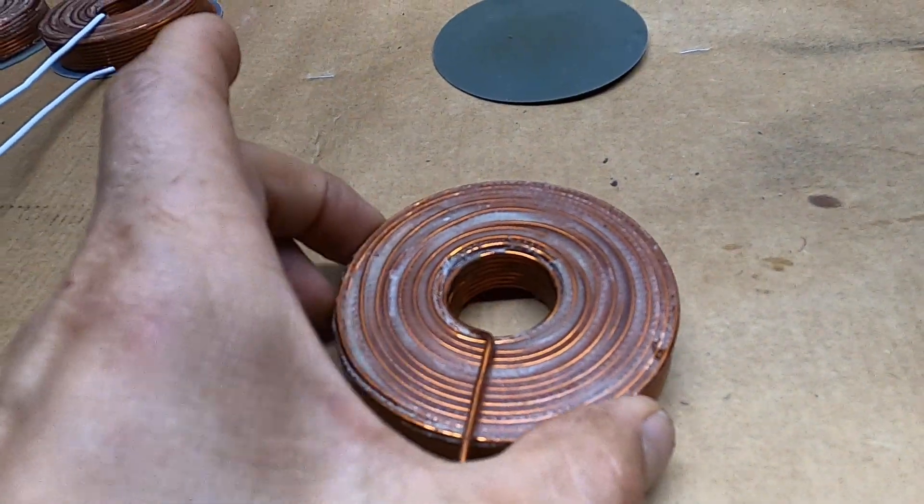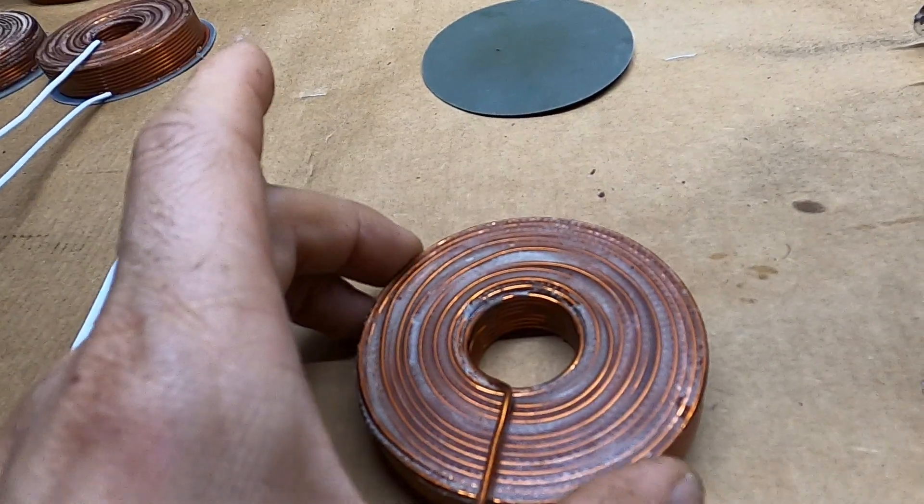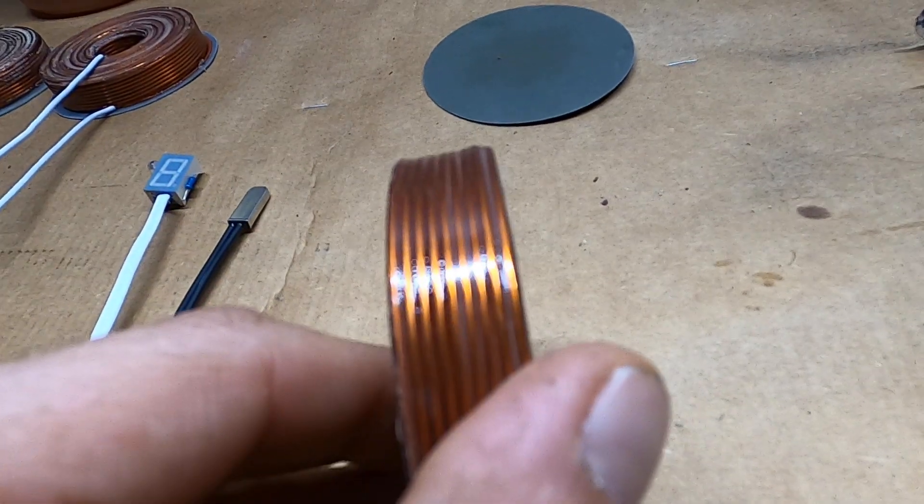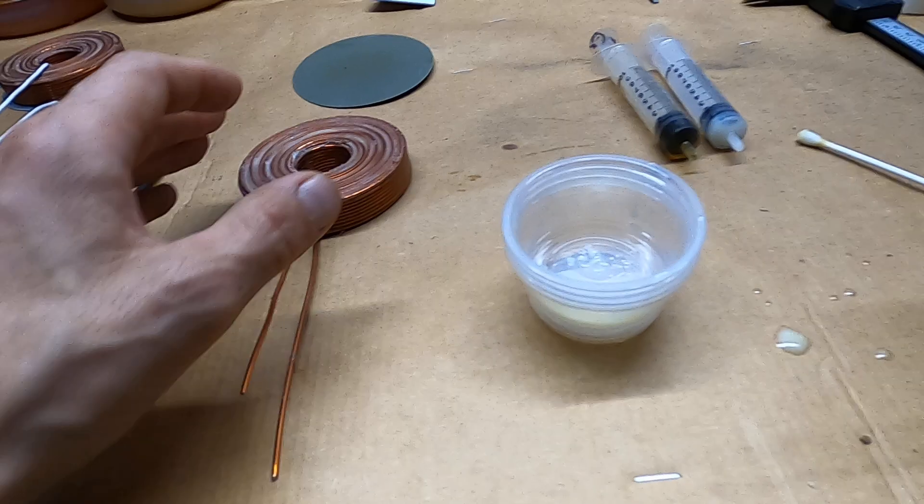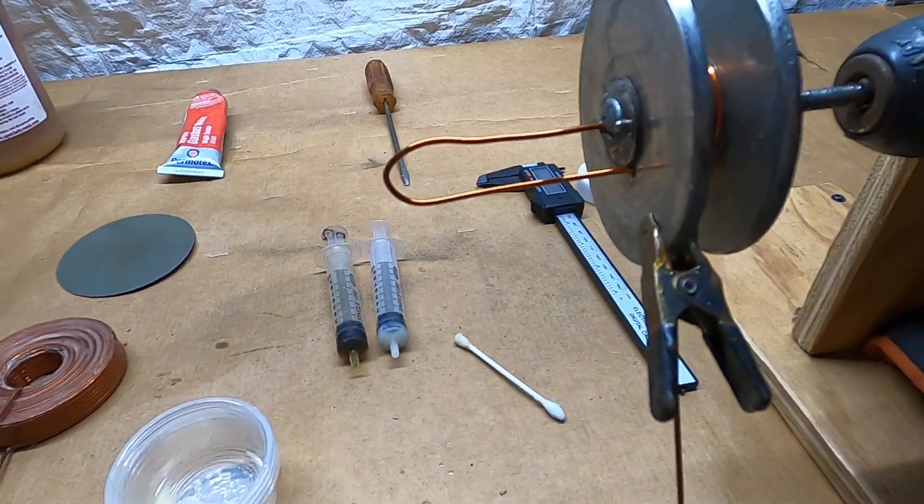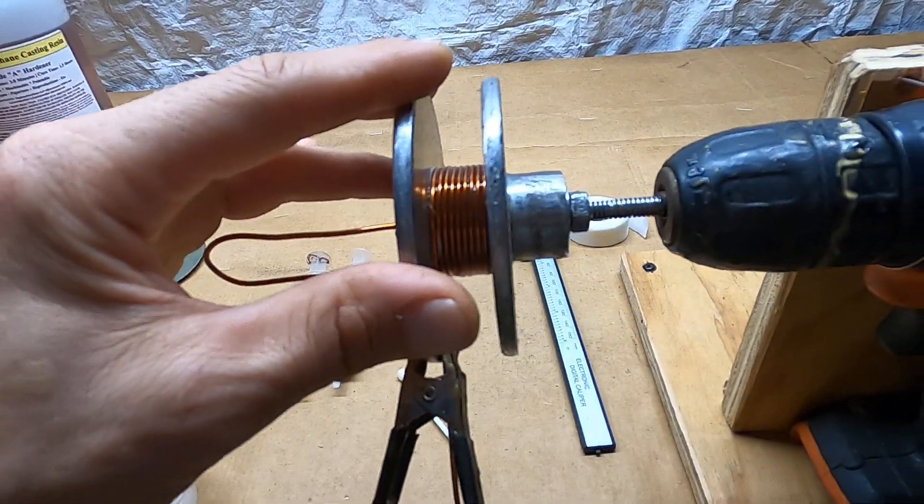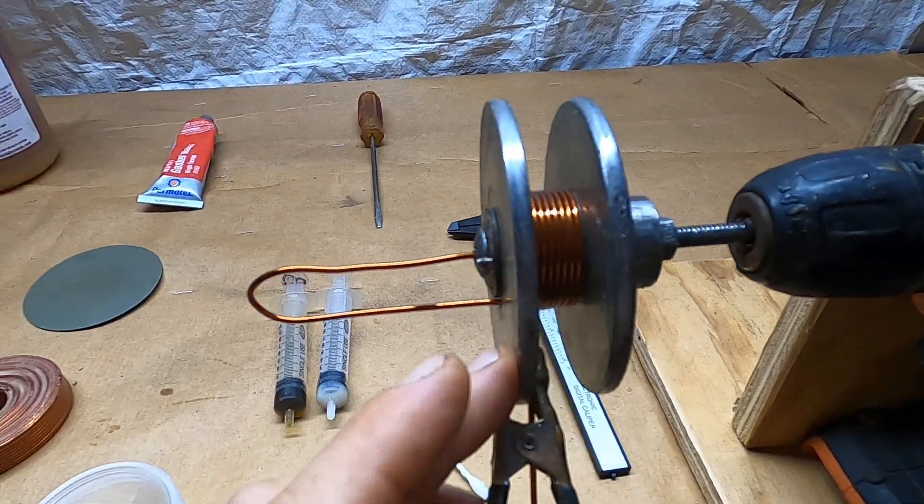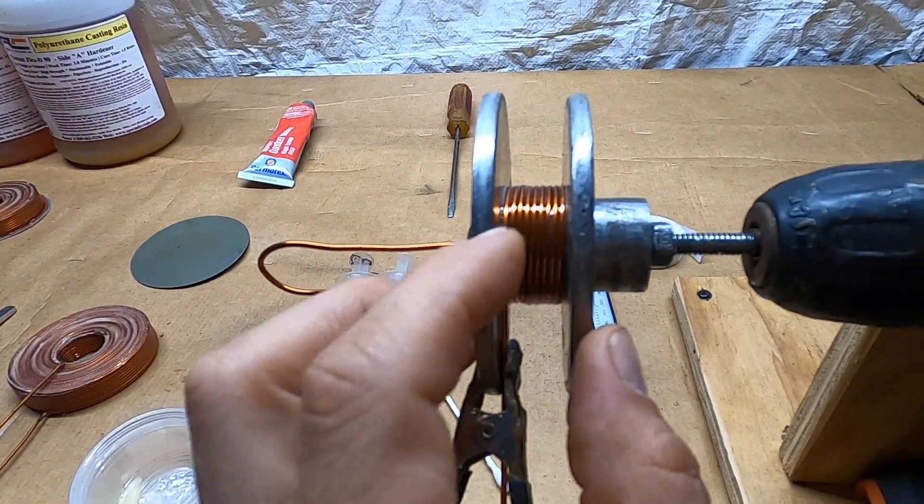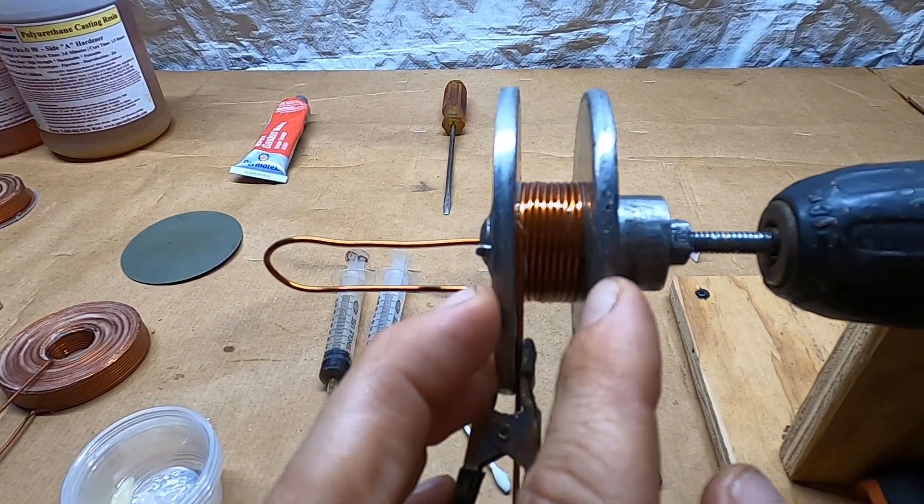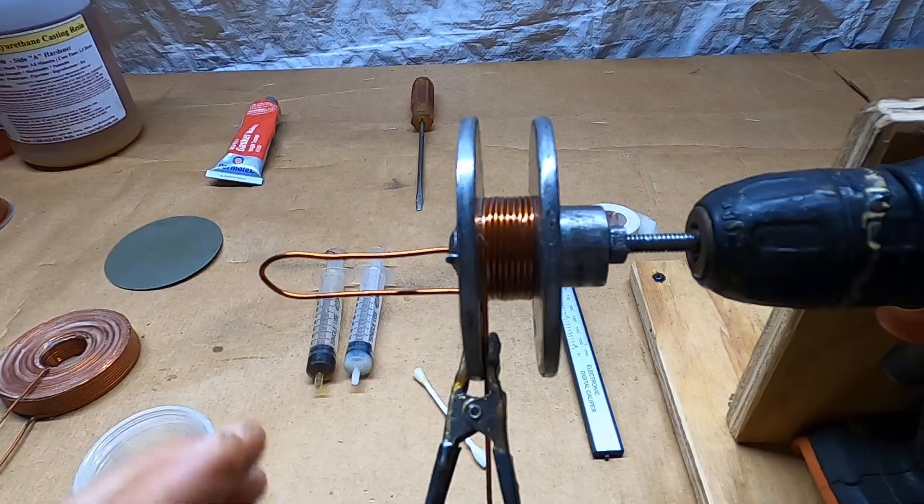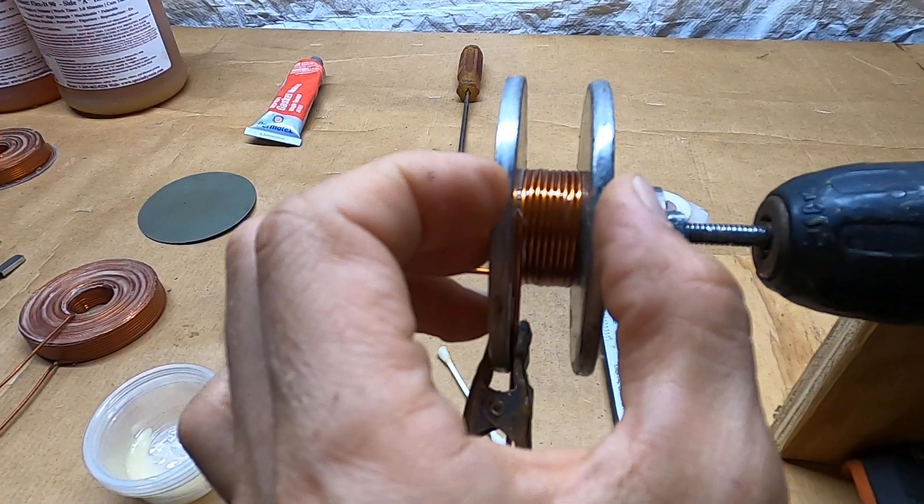The outside diameter is 3 inch, inside is 1 inch, thickness is 5/8 inch. To make this coil I use these two pieces from the speakers and I cut them a little bit so one side is 5/8 inch thickness.